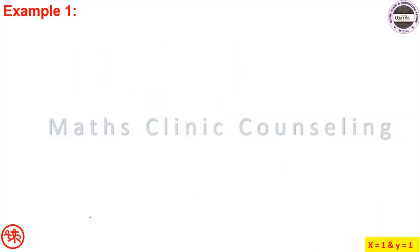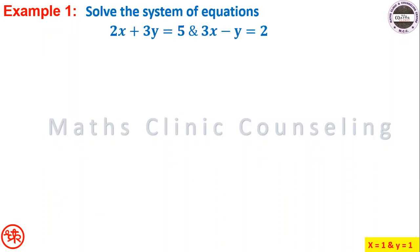Let us see the first example. Solve the system of equations: 2x plus 3y equal to 5, and 3x minus y equal to 2.